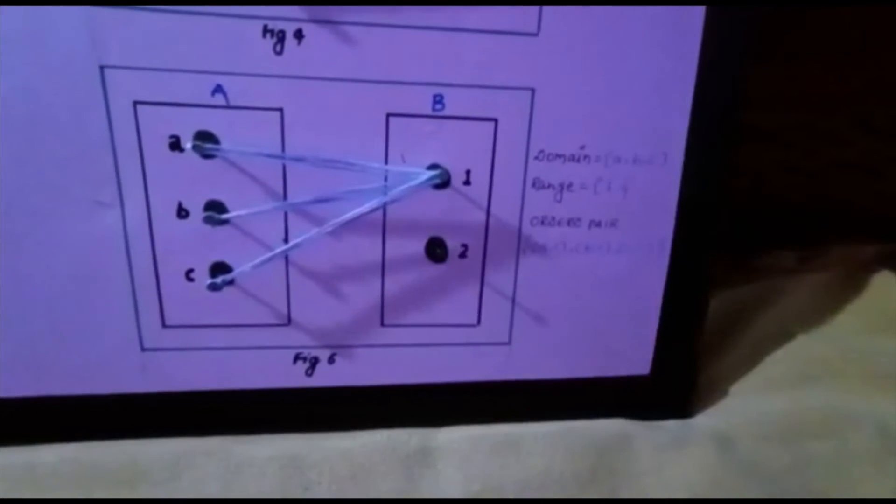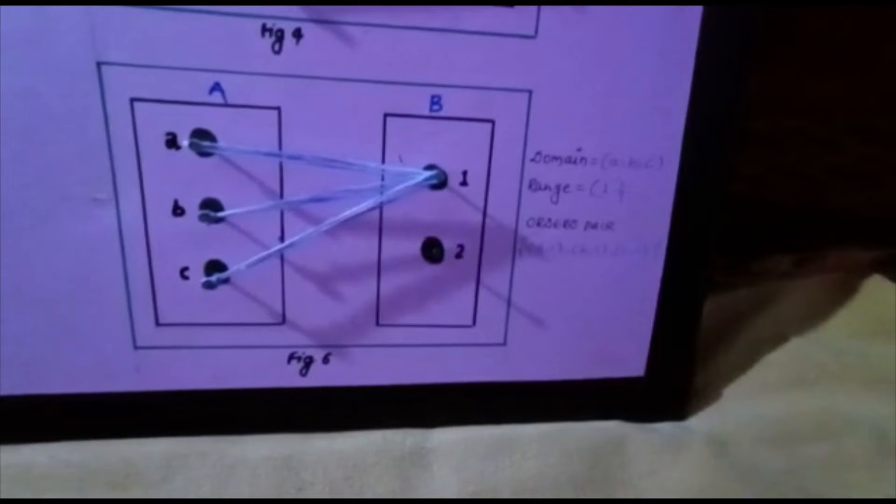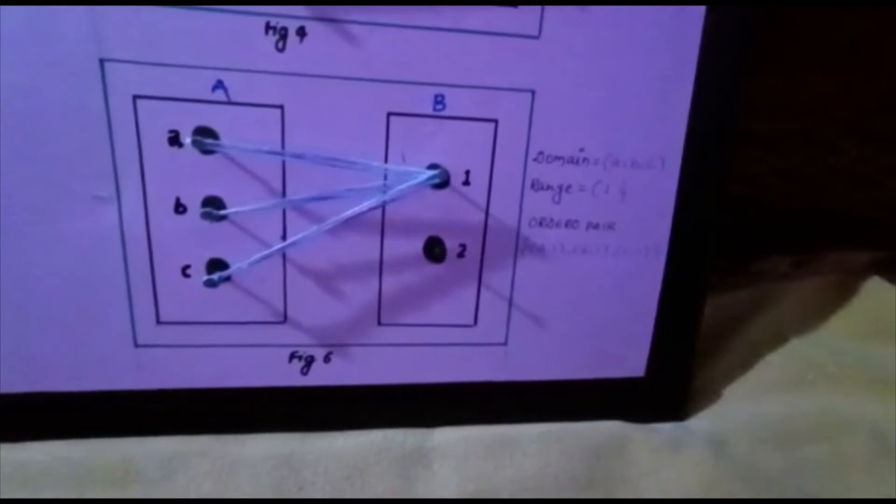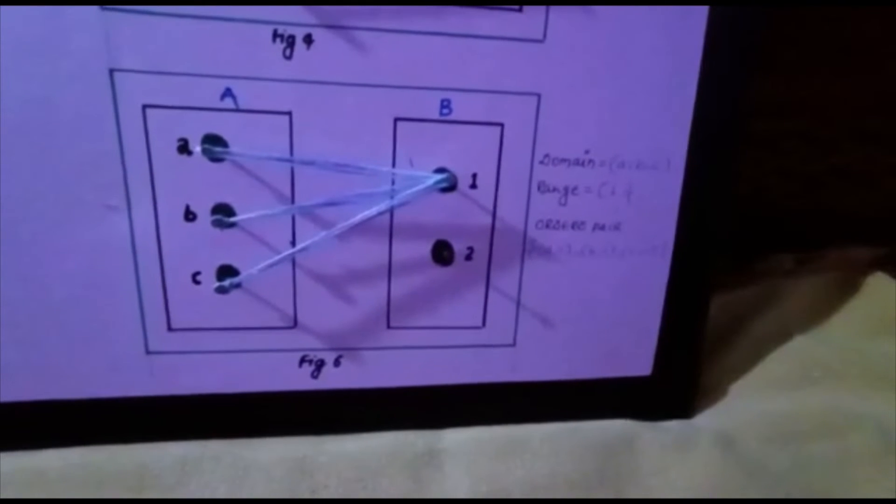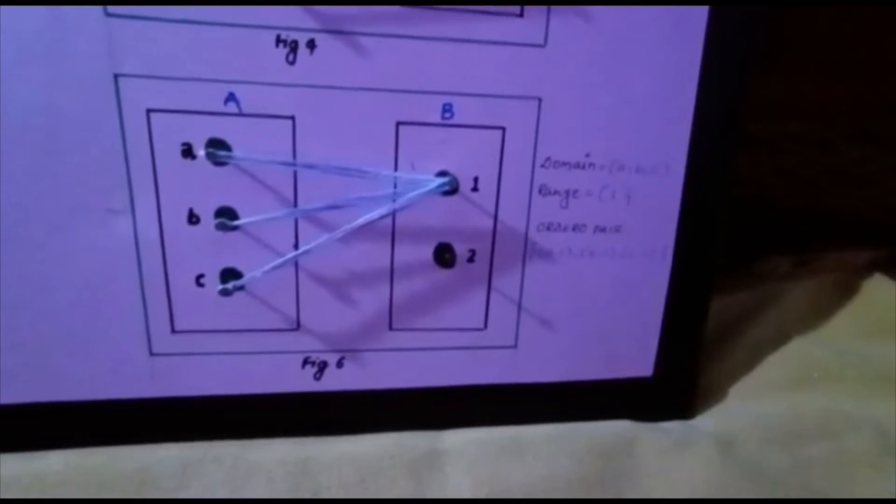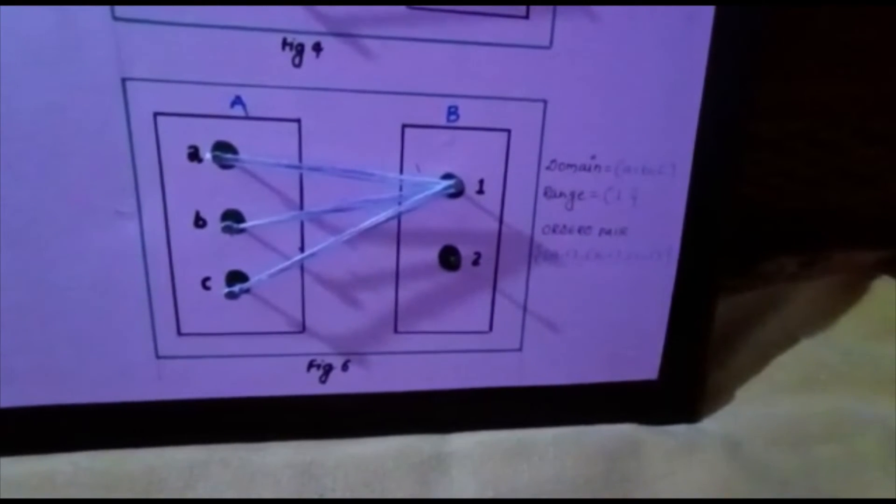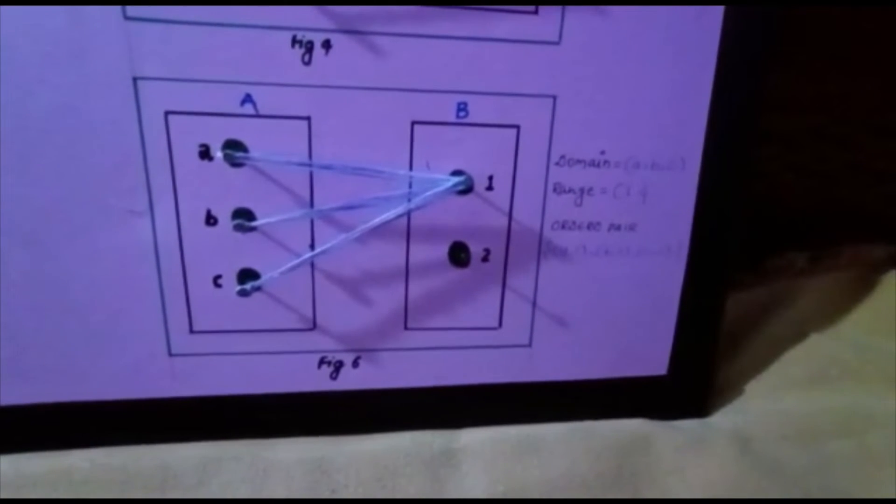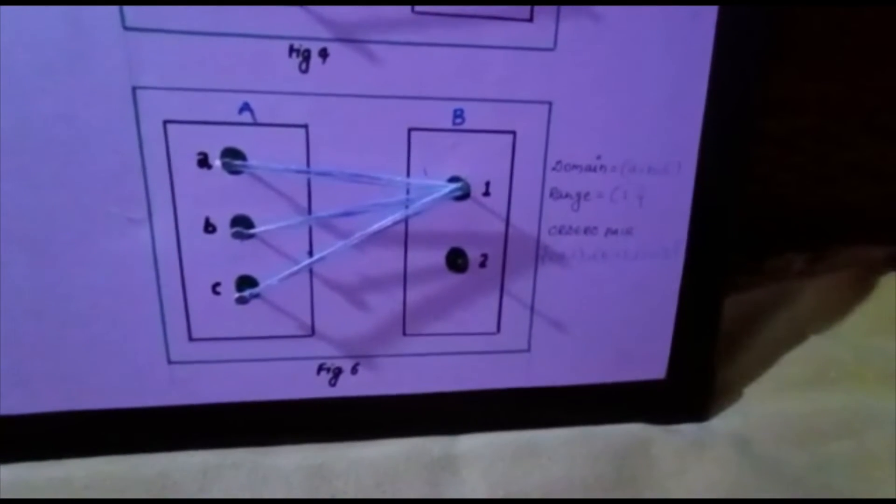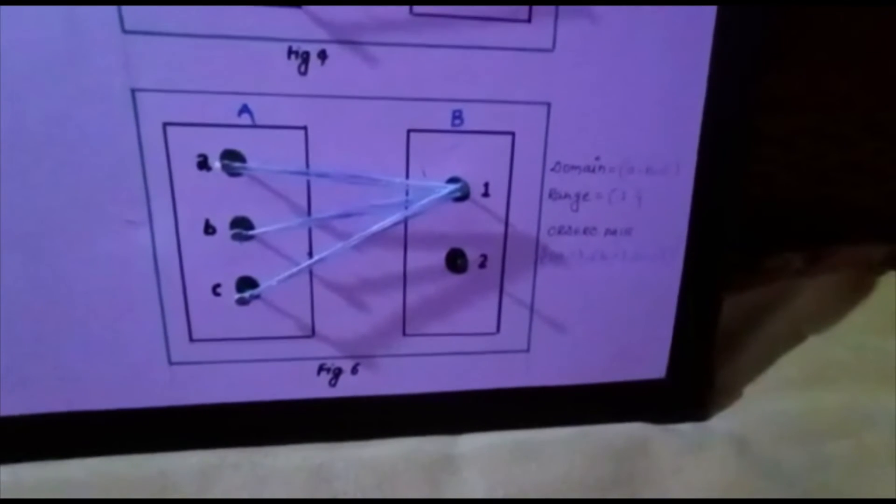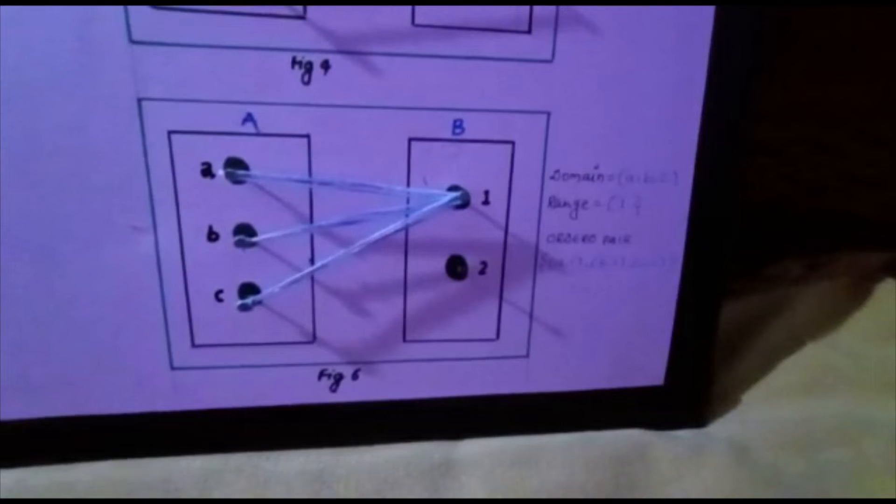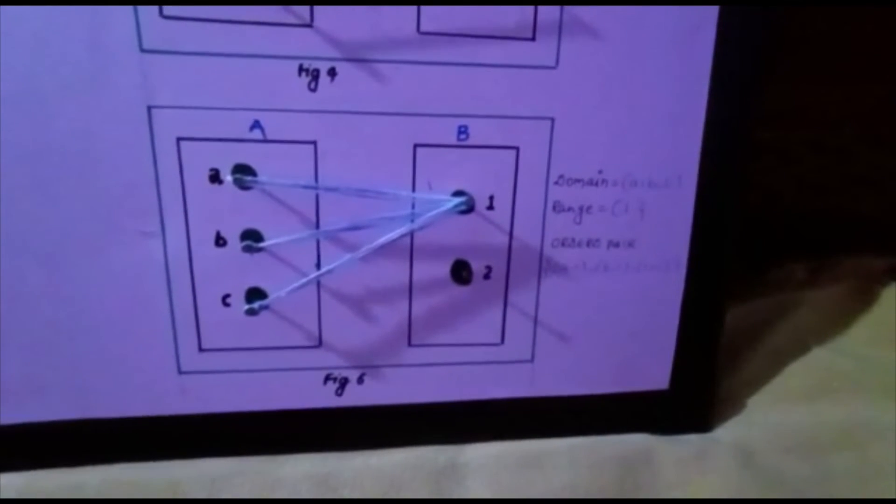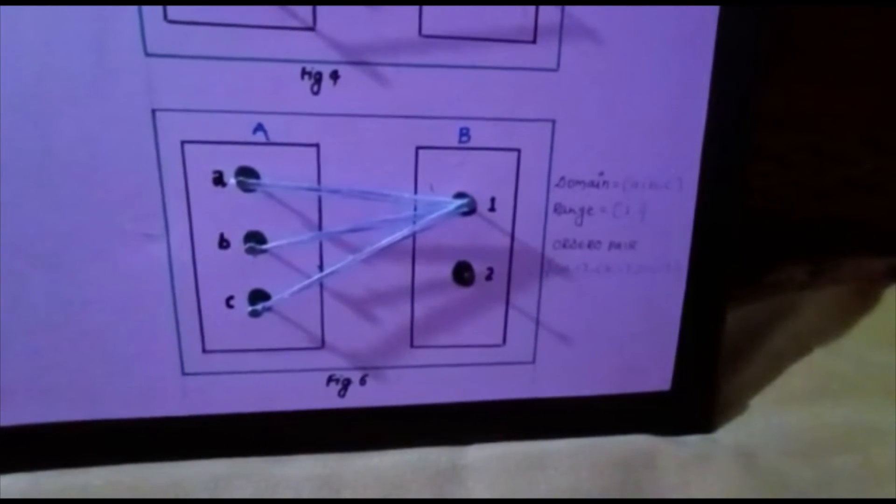Let us take another example as shown in figure 6, where all elements of set A have unique images in set B. No element in set A has two images. Thus, it is both a relation and a function. The domain is {A, B, C} and the range is only {1}. Its ordered pairs are (A,1), (B,1), and (C,1).